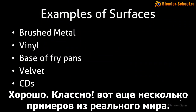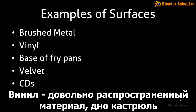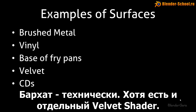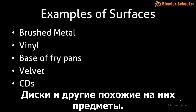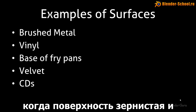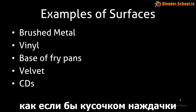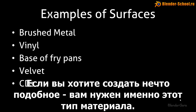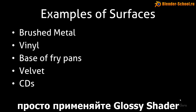Those are a few real-world examples: brushed metal, vinyl, base of a fry pan, velvet technically — though there's a velvet shader as well so be cautious about using it on fabric — and CDs and all sorts of stuff like that. It does have a lot of uses, but basically only use it when the surface you're trying to create has a grain. If it's been sanded — imagine a piece of sandpaper going across it — that's when you use it. If it's just a smooth surface, stick to the glossy shader.